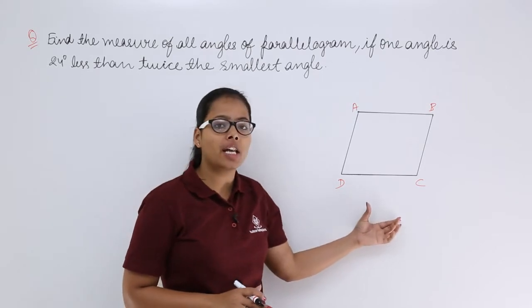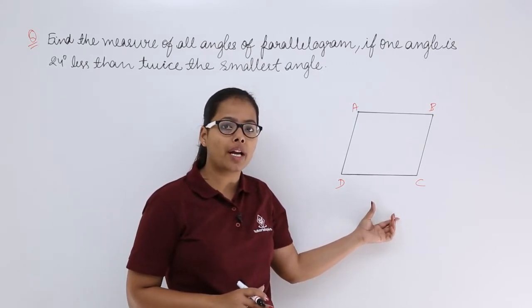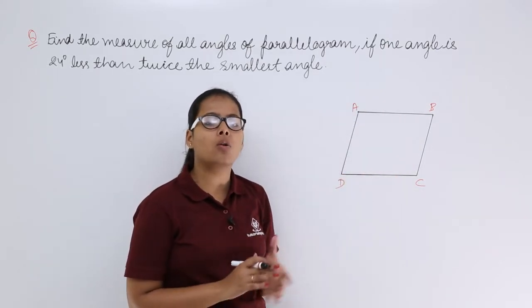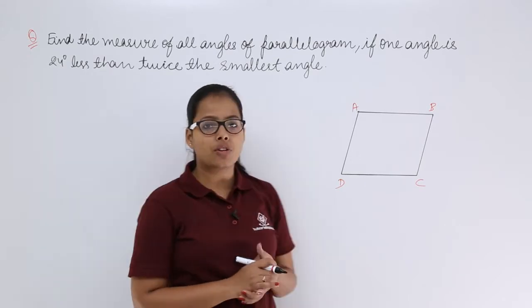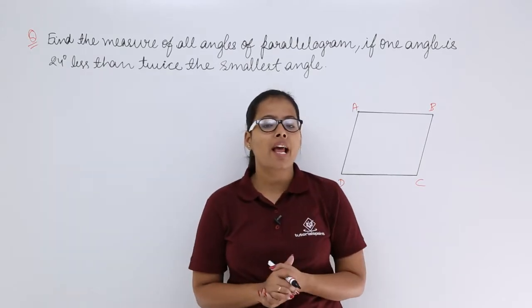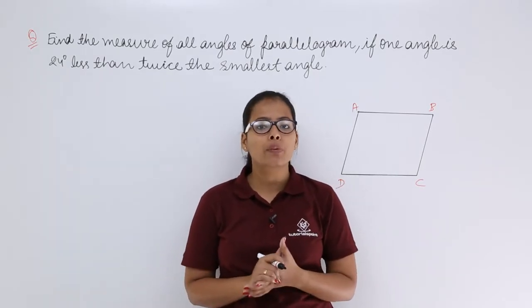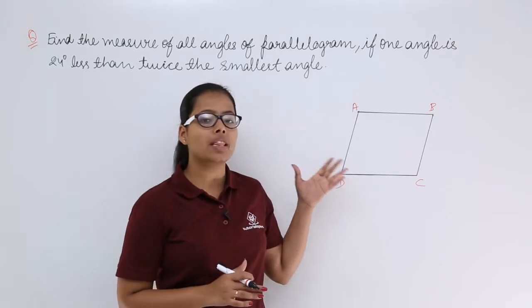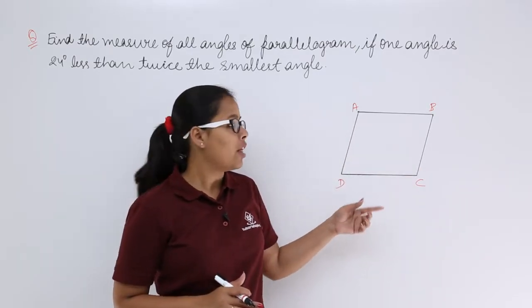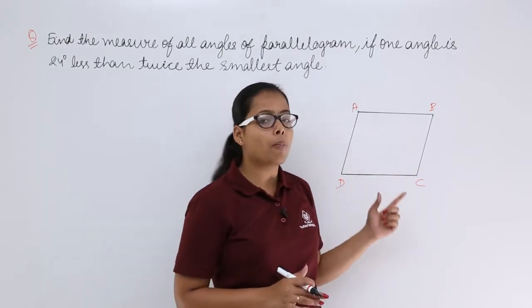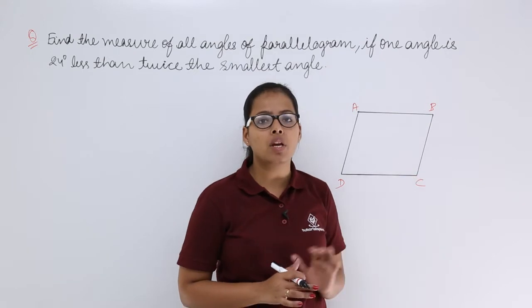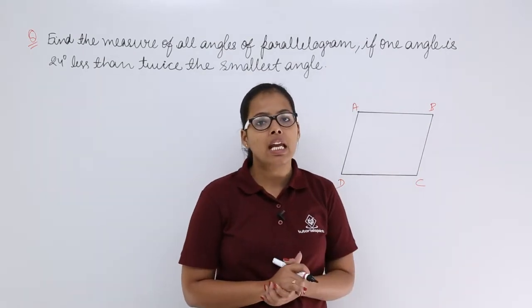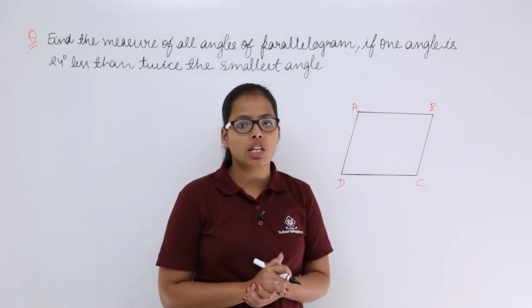You can see this figure on your right-hand side — this is a parallelogram. A parallelogram is a quadrilateral, and a quadrilateral has four sides. When a quadrilateral is a parallelogram, its opposite sides are parallel to each other and its opposite angles are equal to each other.